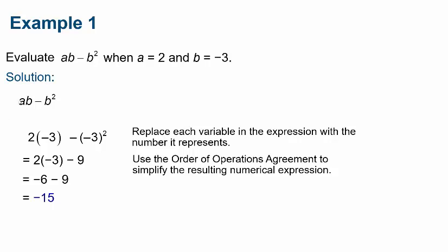Okay, so first off, wherever I see an a, I'm going to replace it with a 2. Wherever I see a b, I'm going to replace it with a negative 3. So it's going to be 2 times negative 3 minus, and then in parentheses I'm going to replace the b with a negative 3 squared.